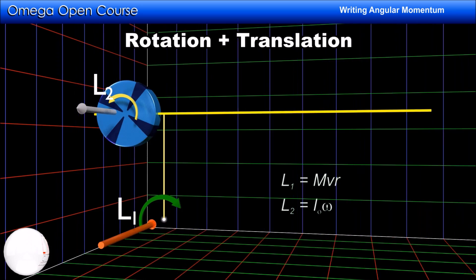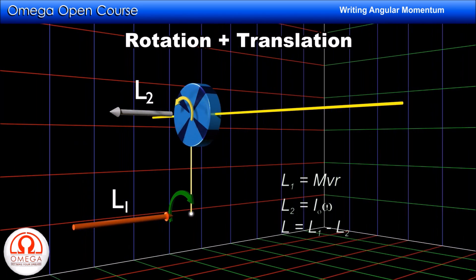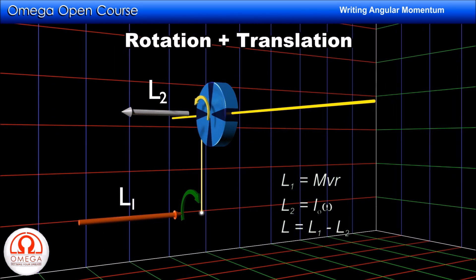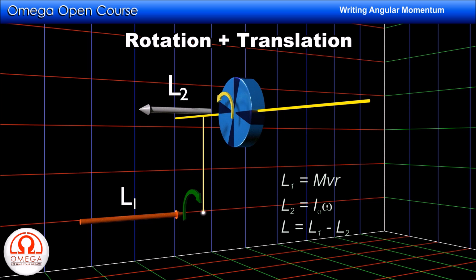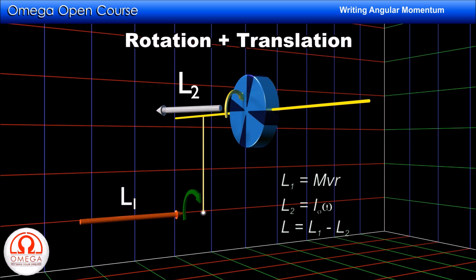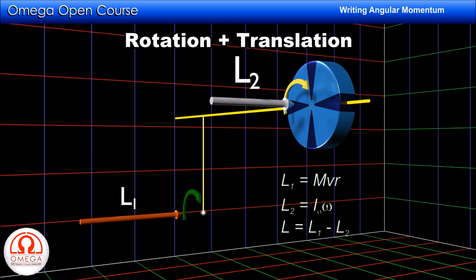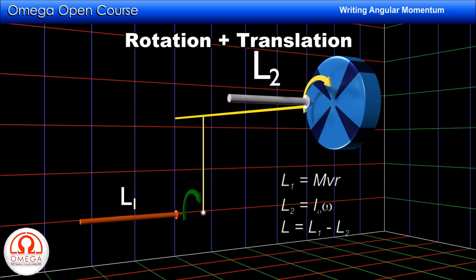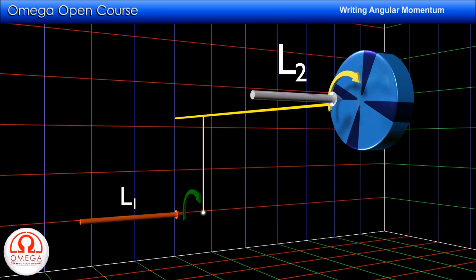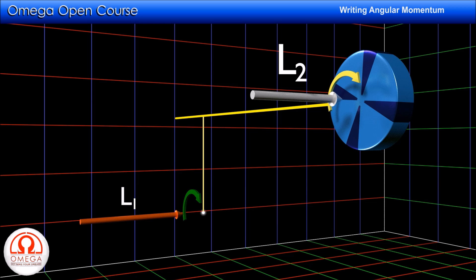The angular momentum of the disc about the given point is L1 minus L2. We subtract L2 from L1 because their directions are opposite. If the disc were rotating in the clockwise direction, then the angular momentum would have been L1 plus L2. It is very important to keep in mind that when the body is both rotating and translating simultaneously, the moment of inertia is always taken about the axis passing through its center of mass, regardless of which point the angular momentum is being calculated about.